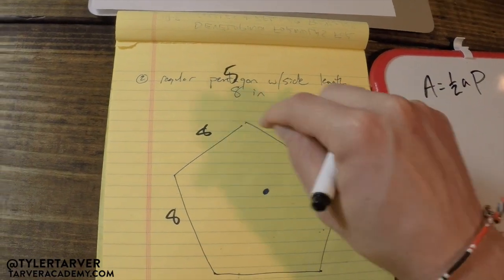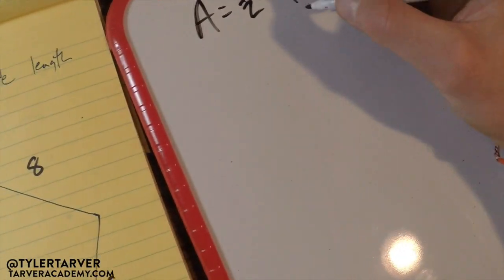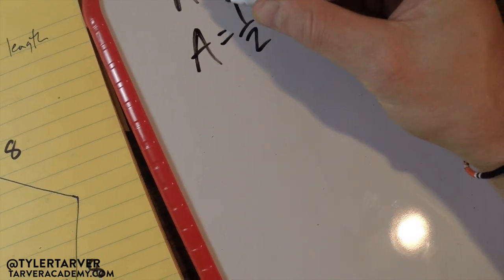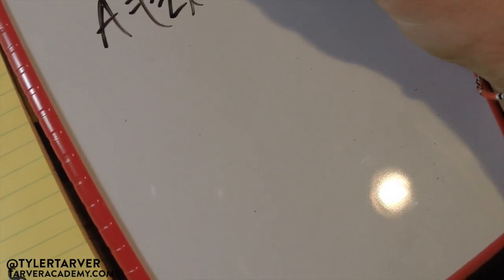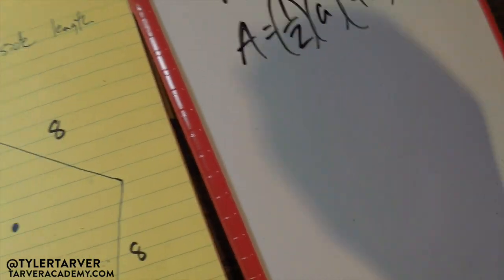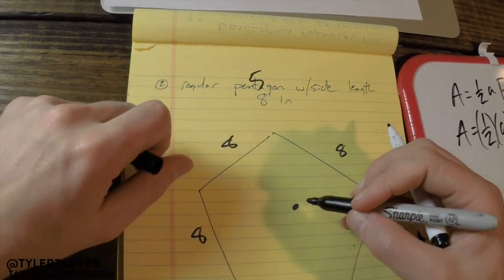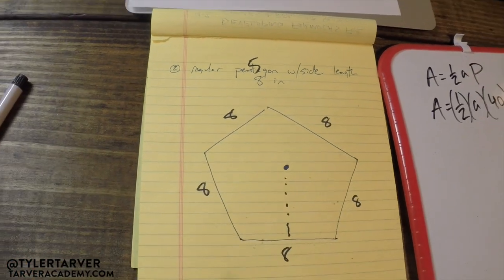I can do 8 times 5 which is 40, so I know I can put that in for my perimeter. So I've got one-half, I don't have my a, and I know this is 40. So all I got to do is find my apothem, which we know is this little fellow right here.